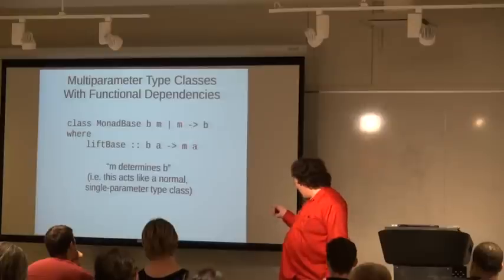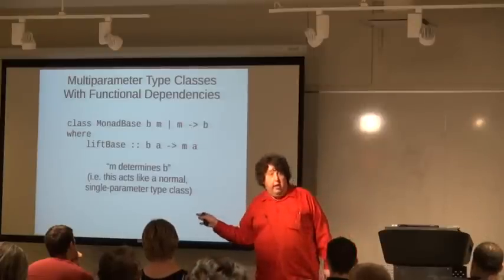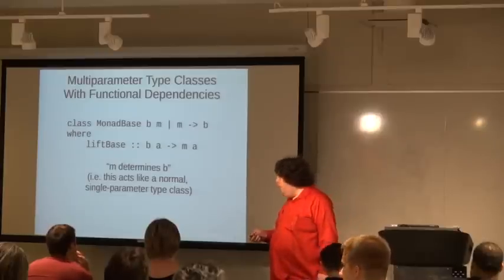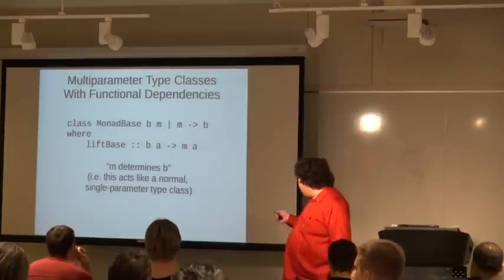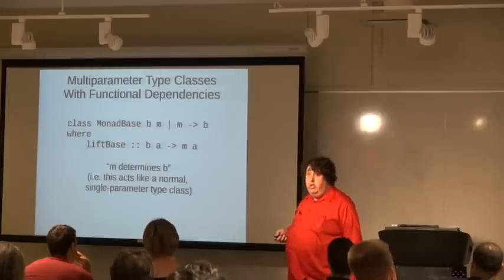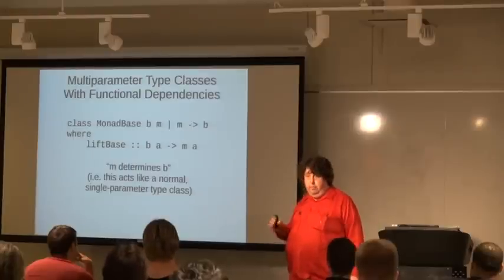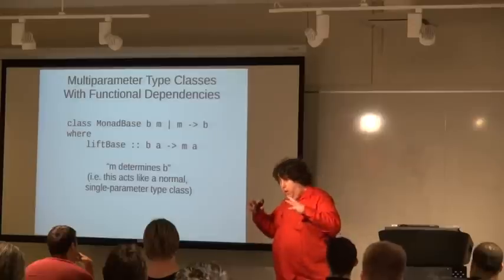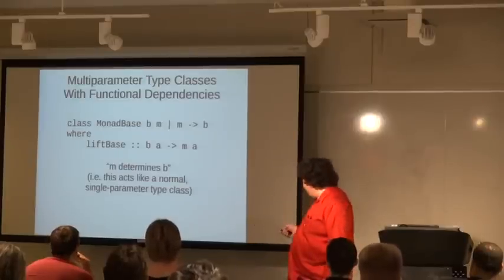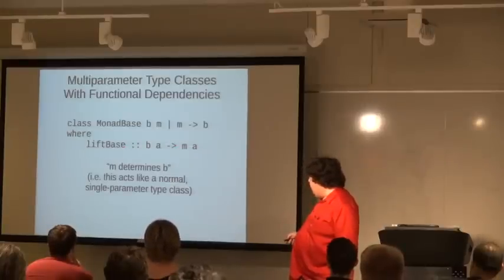This is called functional dependencies — it's actually more powerful than what I've shown. The pipe M arrow B says: if we know M we can determine B. This is a multi-parameter type class, but it acts like a classic single-parameter type class — if we know one type, we know what type class we're dealing with. And that gives us: liftBase goes from B A to M A.